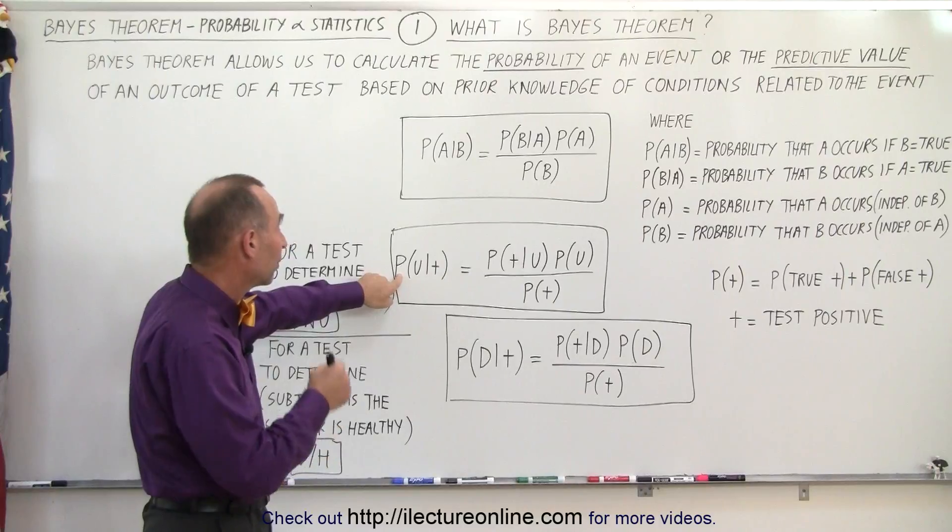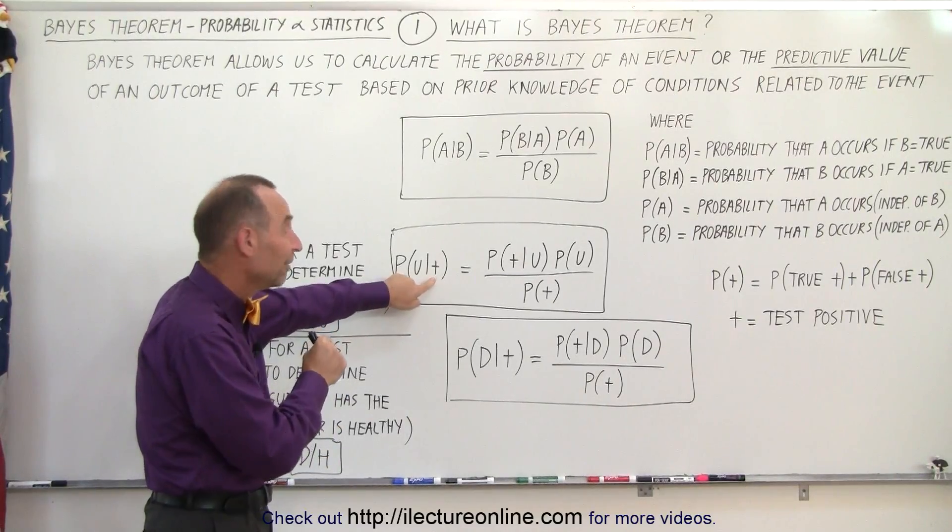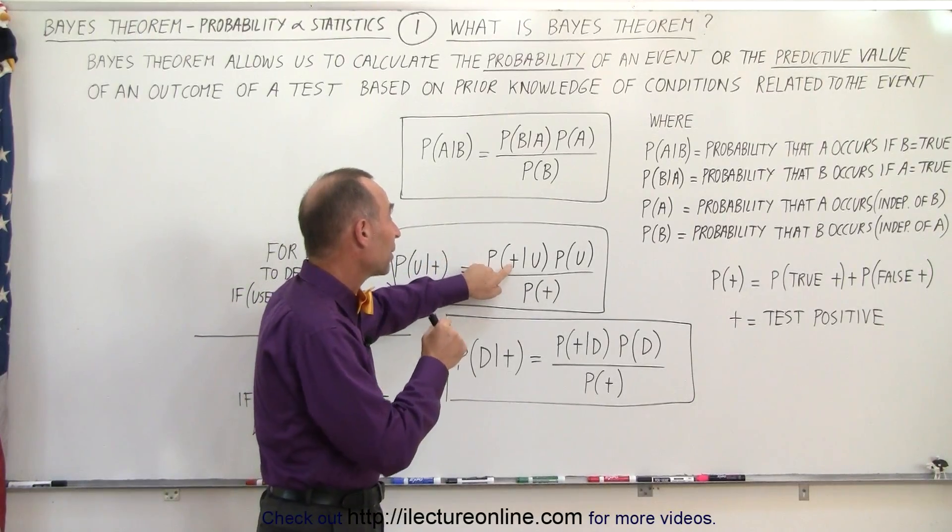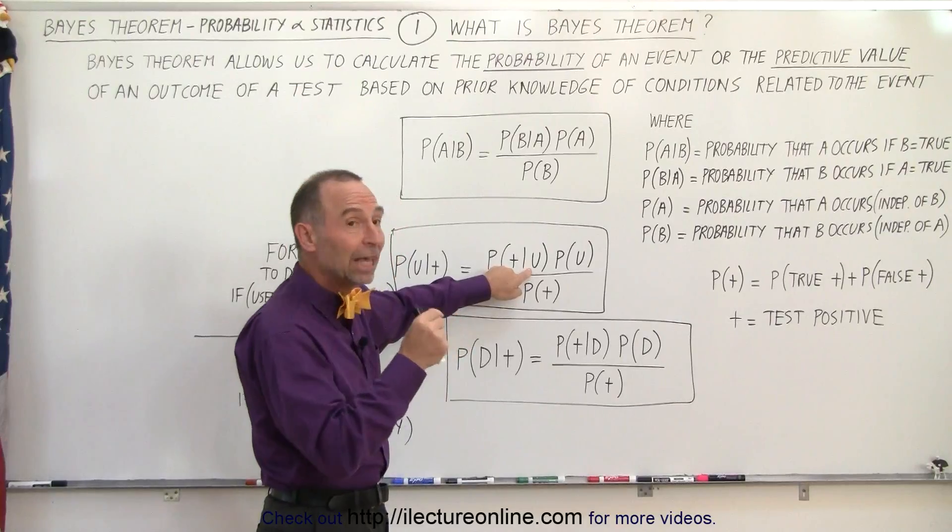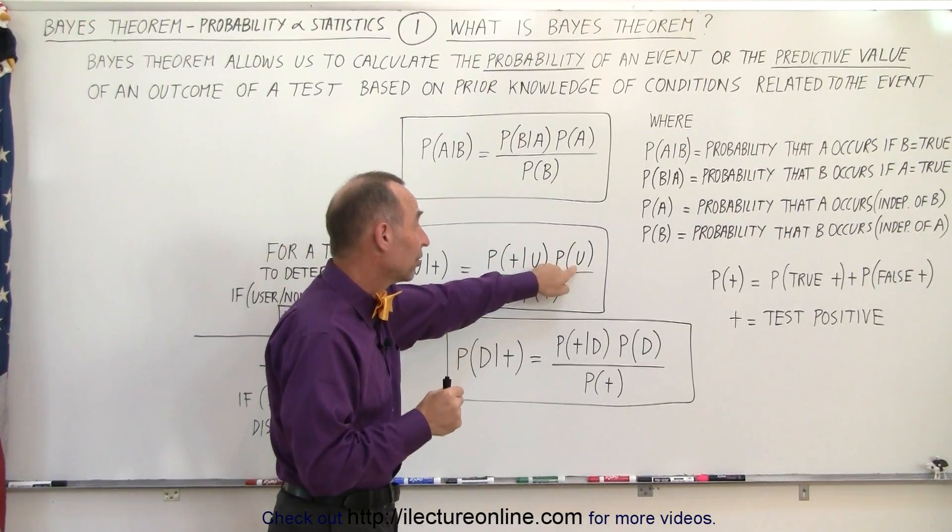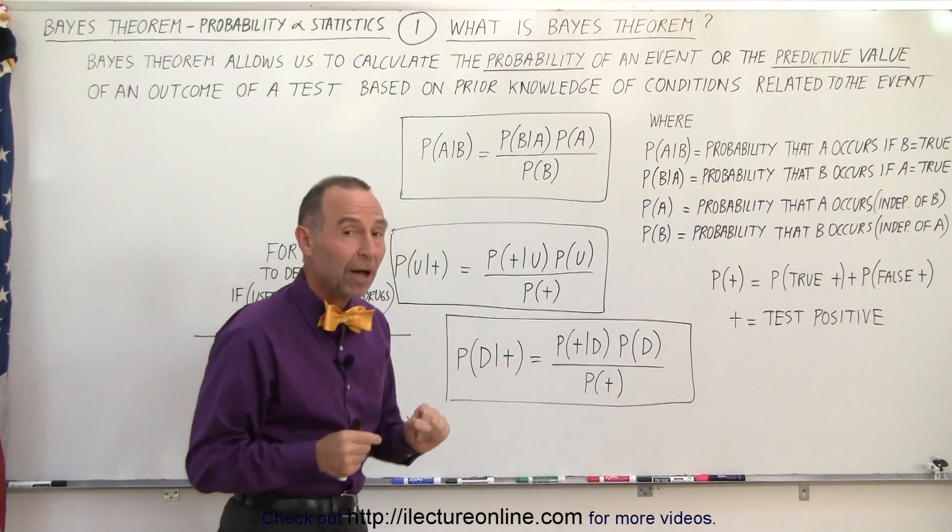And here we can say that the probability that the subject is a user if the test came out positive is equal to the probability that the test came out positive if the subject is a user of drugs times the probability that the person being tested is a user divided by the probability that the test came out positive.